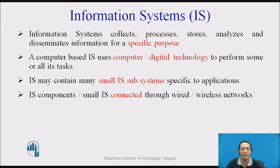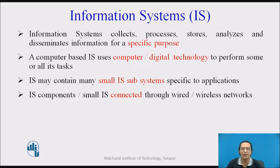Similarly, we have discussed about the information system, especially the digital information system, which collects, processes, stores, analyzes, and distributes data or information for a particular specific application or purpose. When we say digital information systems, we are using computers and digital devices like mobile phones as end devices. The small sub-systems of the information system are connected and communicating with each other using wired or wireless networks like the internet.